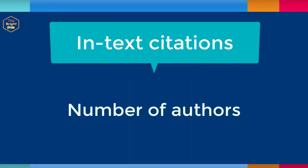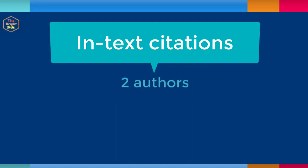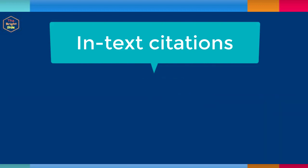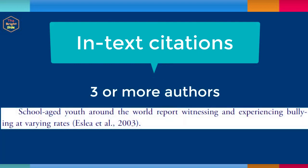There are also a number of rules for how to list authors depending on the number of authors. If the material you are citing has two authors, you need to include both authors' last names. Use an ampersand when the citation is at the end of the sentence, and use the word "and" when the authors' names are written in the sentence. If the material you are citing has three or more authors, list only the first author's name, followed by "et al.," comma, and then the year of publication.